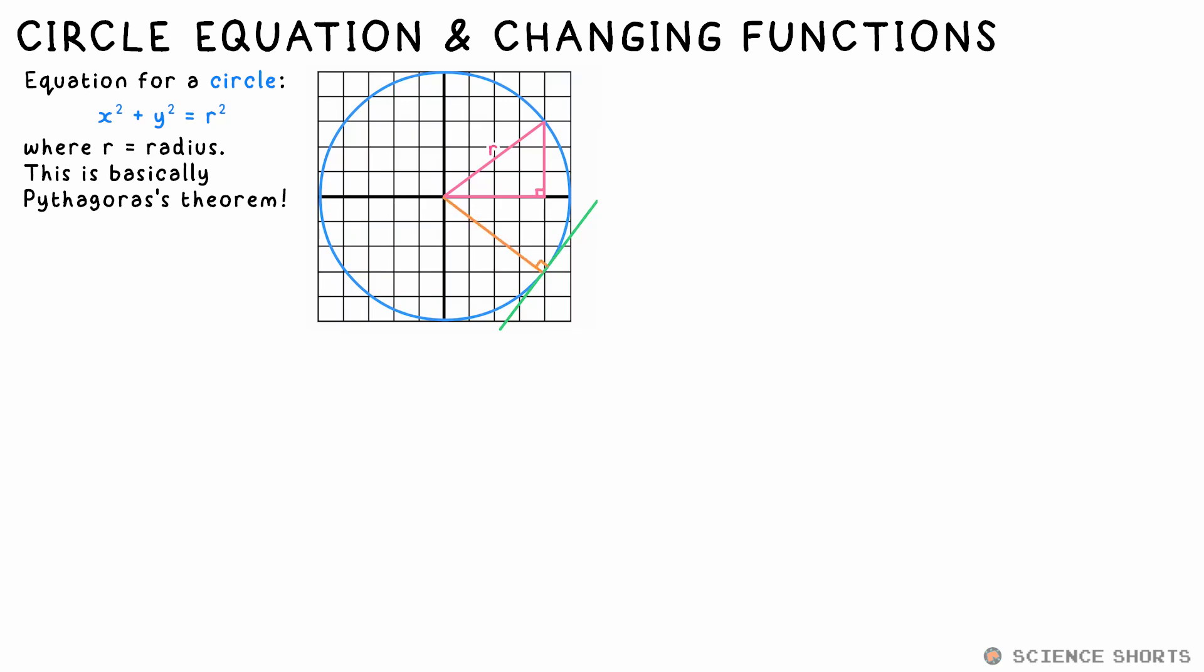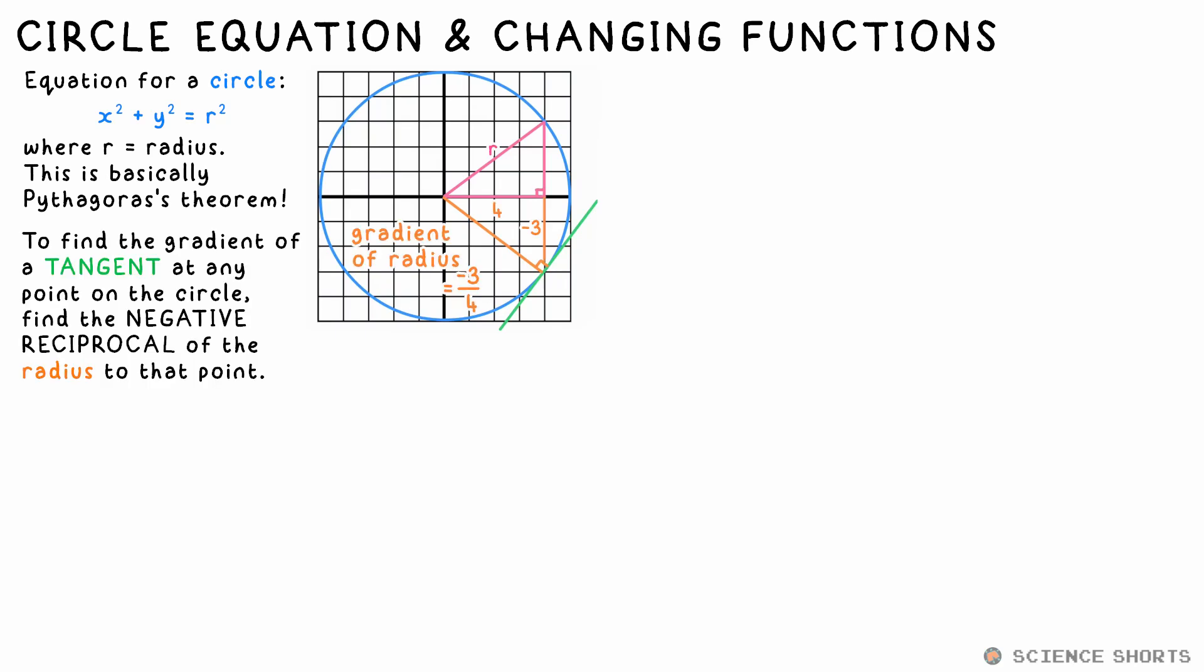As the hypotenuse of our right angle triangle is perpendicular to this tangent, we just do what we did earlier. Find the gradients of this hypotenuse. Don't forget it could be negative and the gradient of the tangent will be the negative reciprocal of this.